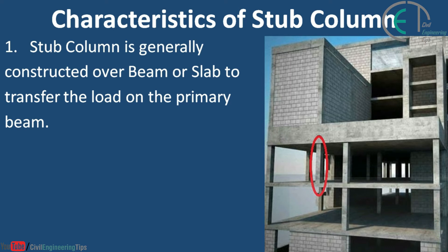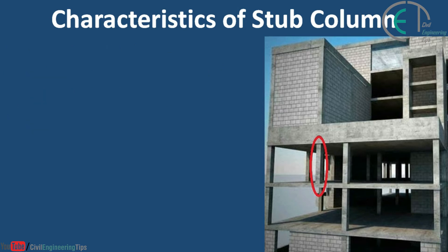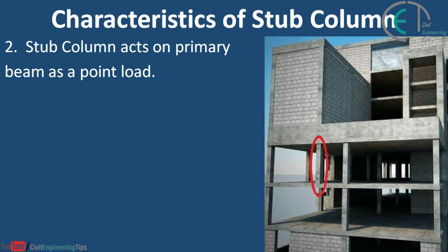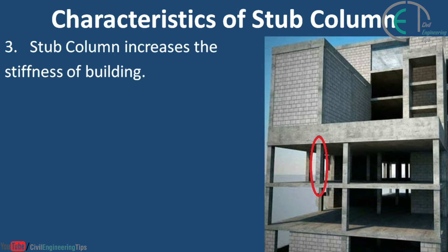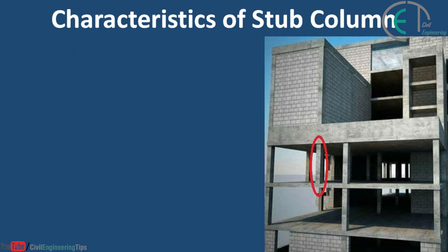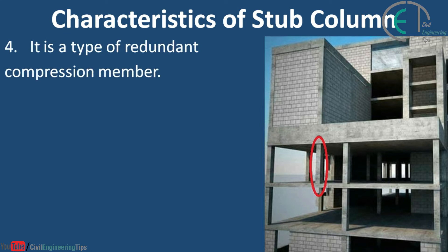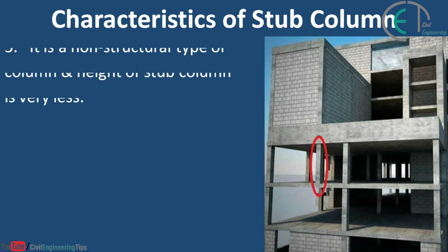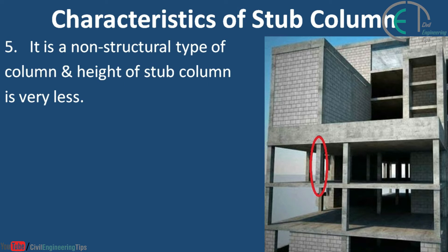Now let's discuss about the characteristics of stub column. A stub column is generally constructed over a beam or slab to transfer the load onto the primary beam. It acts on the primary beam as a point load. Stub column increases the stiffness of a building.